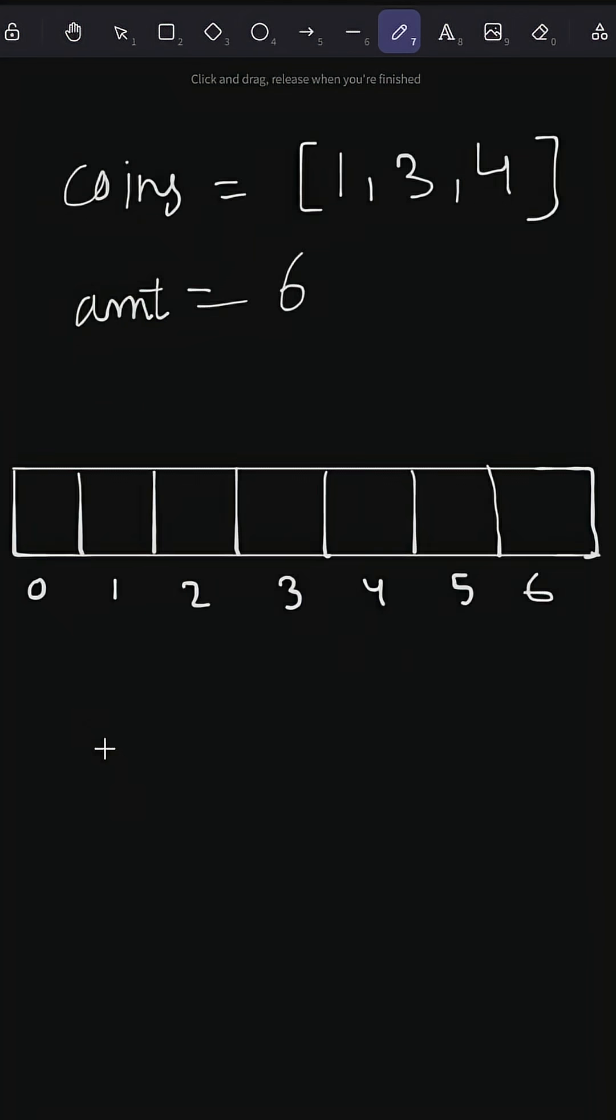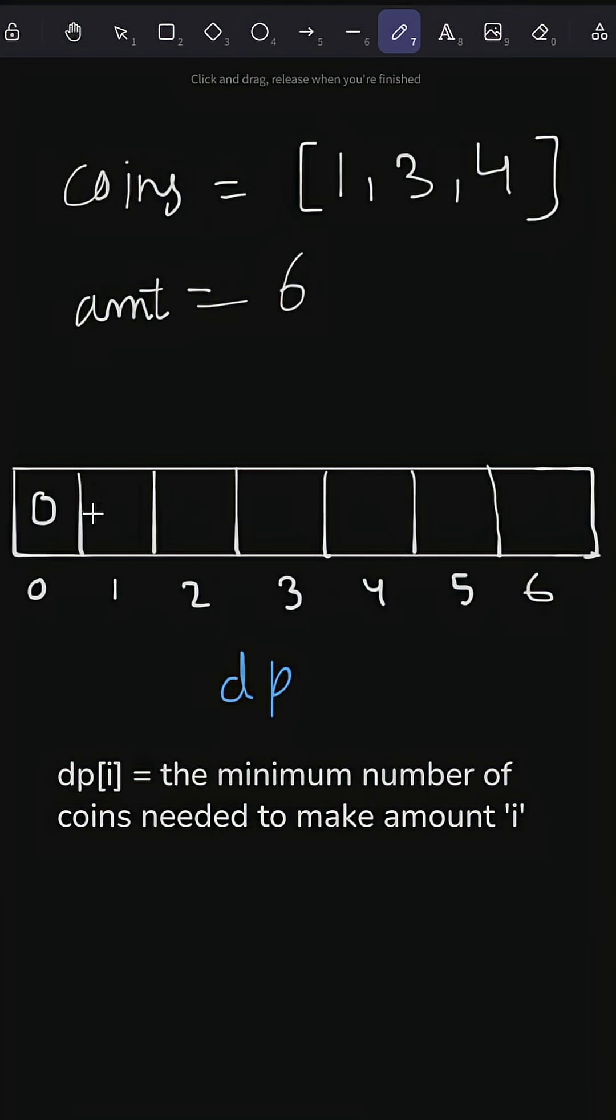Let's try dynamic programming. Here we create an array of size amount. Let's call this array dp. So dp[i] represents the minimum number of coins needed to make amount i. To make 0 amount, we don't pick any coins, so it's 0. The rest of the elements we initialize with infinity. Then we build the solution bottom up.